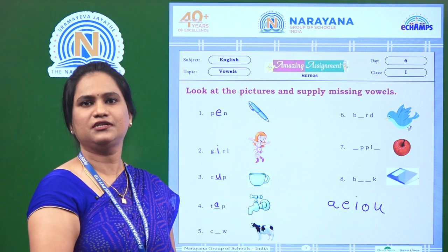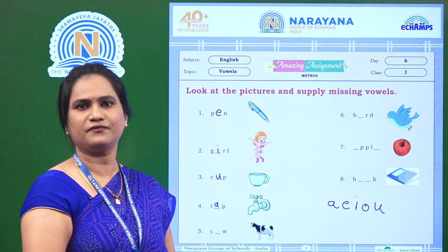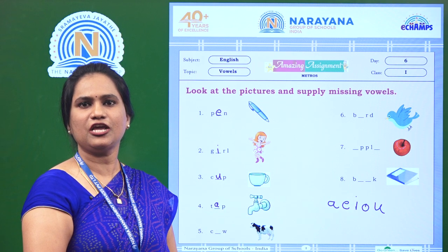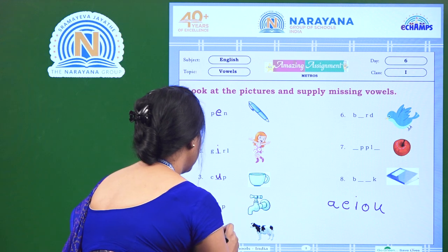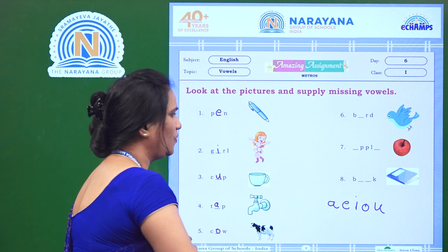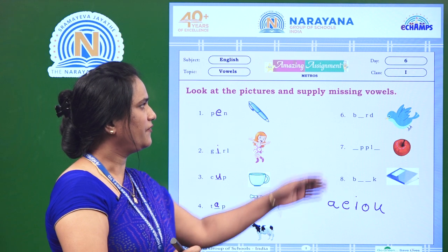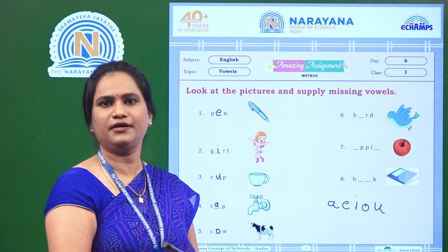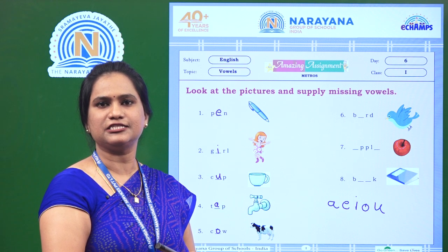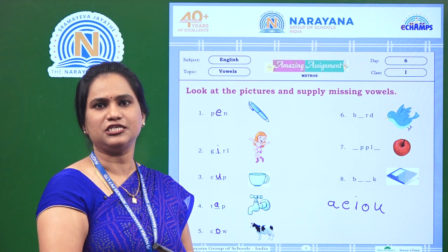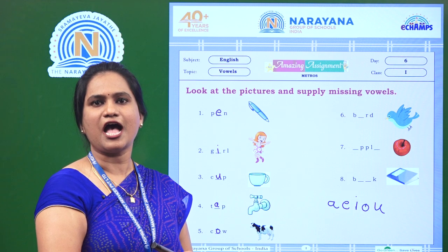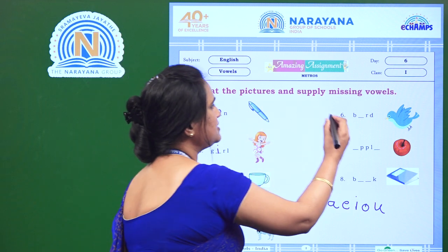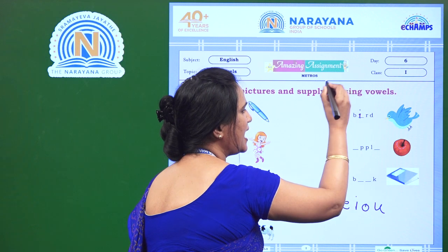The next picture is cow. The spelling of cow is C, O, W — cow. So the missing vowel here is O. So let us fill in the blank with O. The next picture is bird. The spelling of bird is B, I, R, D — bird. So the missing vowel here is I. So let us fill in the blank with I.